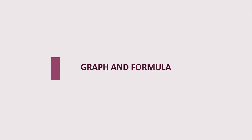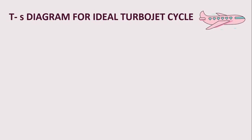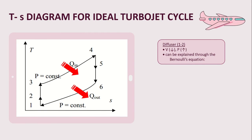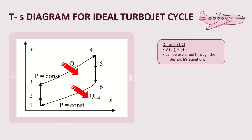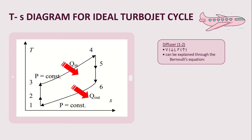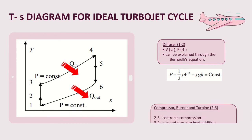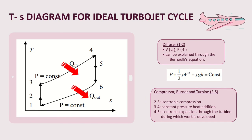The basic graph for the ideal jet propulsion cycle can be constructed from temperature T versus entropy S. From step 1 to 2, which occurs in the diffuser, the incoming flow decelerates relative to the engine. A pressure rise known as the ram effect occurs — when velocity decreases, pressure increases. This can be explained through Bernoulli's equation: pressure plus one-half rho V-squared plus rho g H equals constant.